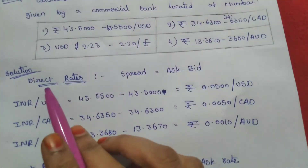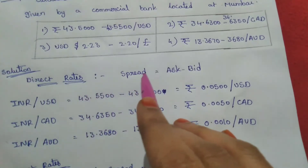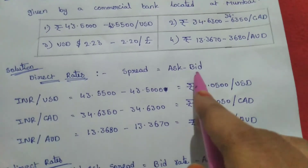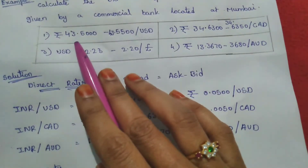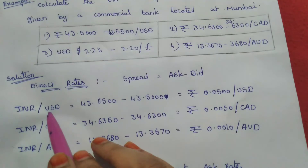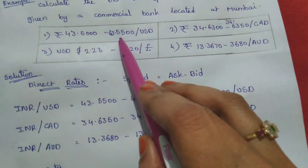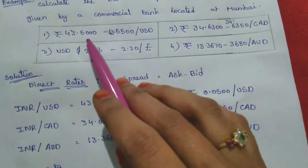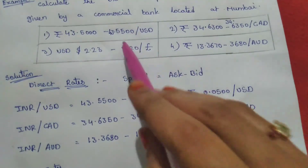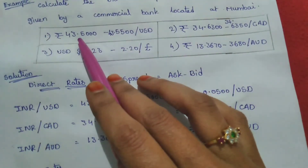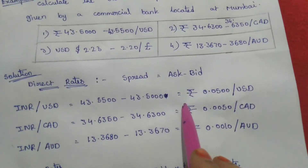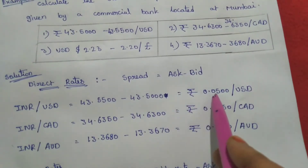For direct rates, the spread formula is: Bid-Ask Spread = Ask Price minus Bid Price. For the first quotation — Indian rupees per US dollar — the ask price is 43.5500 and the bid price is 43.5000. Therefore, the spread = 43.5500 minus 43.5000 = 0.0500 rupees per US dollar.